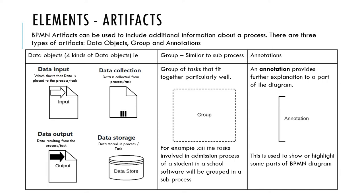The next type of element is called artifacts. BPMN artifacts can be used to include additional information about a process. There are three types of artifacts: data objects, group, and annotation. There are four kinds of data objects: data input, which shows data placed into the process as a task; data output, which shows data resulting from the process; data collection, which shows data collected from the process; and data storage, which shows data stored in the process.